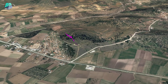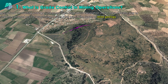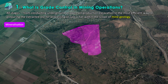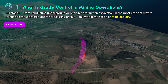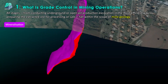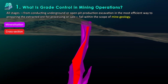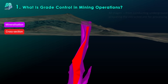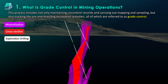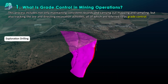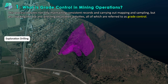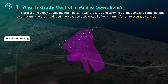Our subject is grade control in mining operations. All stages from conducting underground or open pit production excavation in the most efficient way to preparing the extracted ore for processing or sale fall within the scope of mine geology. This process includes not only maintaining consistent records and carrying out mapping and sampling, but also tracking the ore and directing excavation activities — all of which are referred to as grade control.